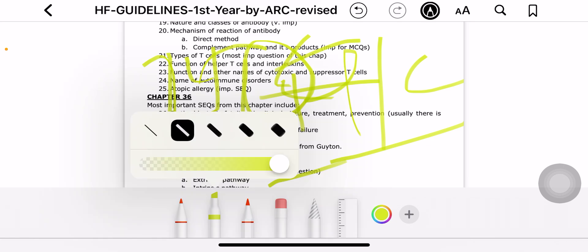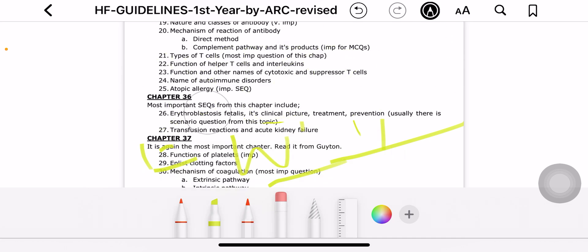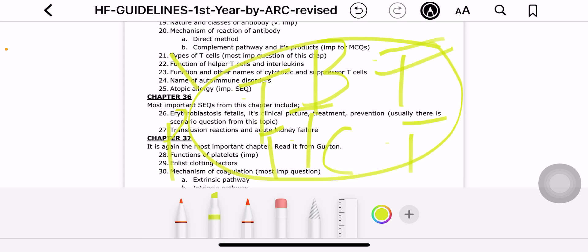Then the most important practical questions that come are bleeding time, clotting time, prothrombin time, and thrombin time. Their definitions plus their values - these are very, very important.